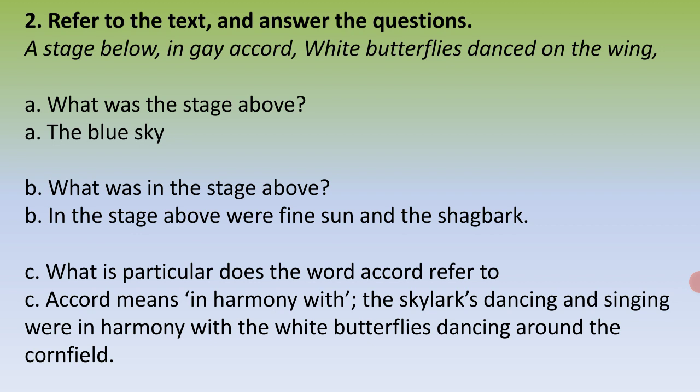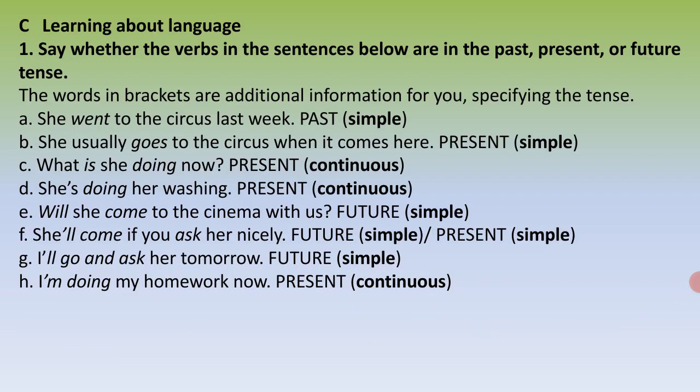In section C we will be learning about language — specifically tenses. You have to write against each sentence whether it is past tense, present tense, or future tense. Let's start. 'She went to the circus last week' — past simple. 'She usually goes to the circus when it comes here' — present simple.